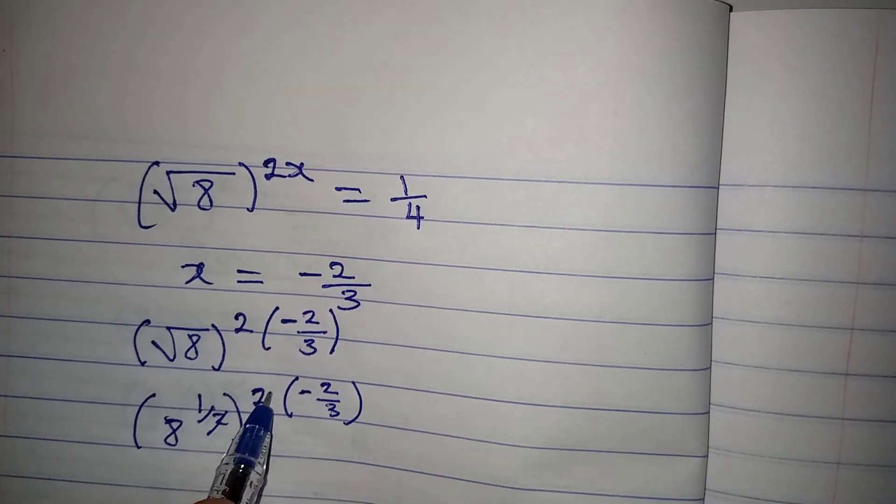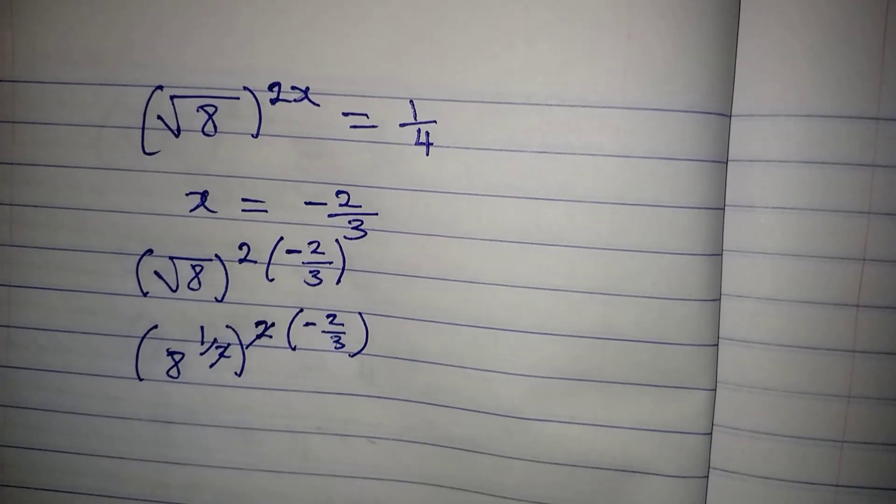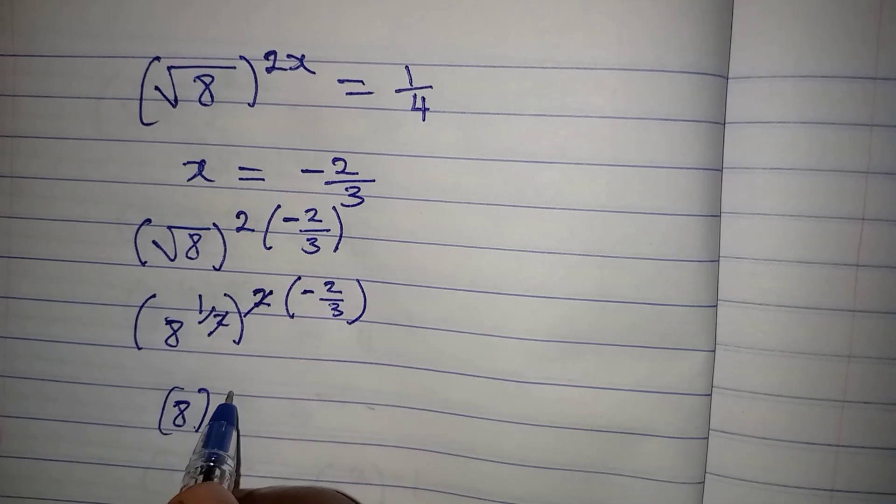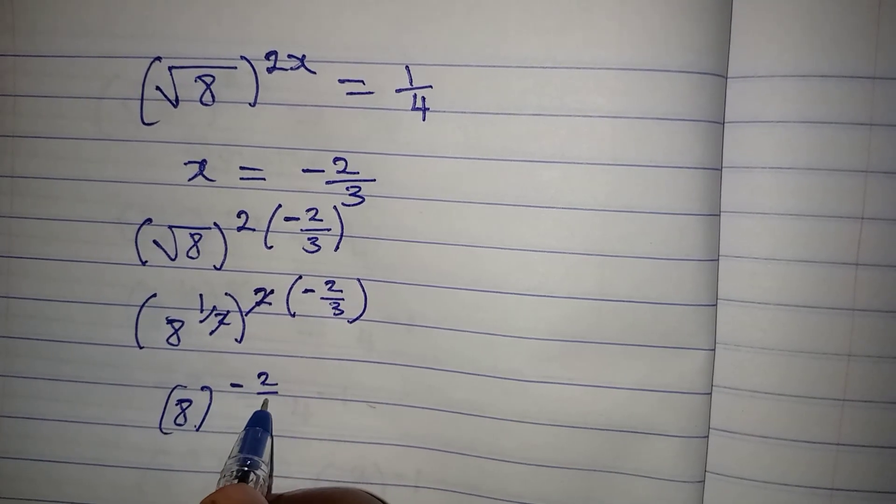Now, these 2 will go with this. And this means that we are having 8 to the power of negative 2 over 3 now.